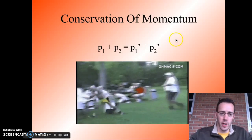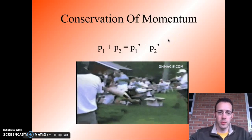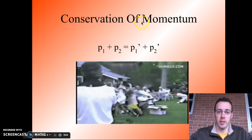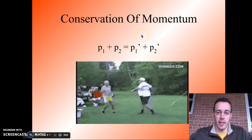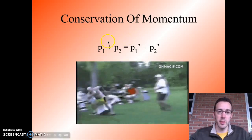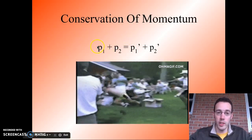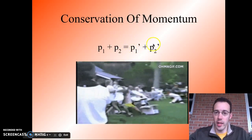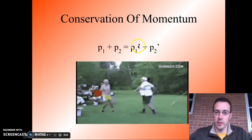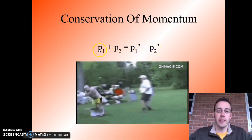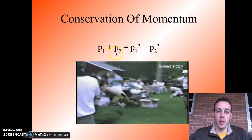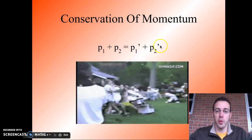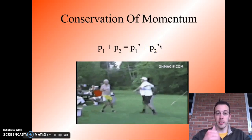Why do we care about momentum and how does it affect collisions? It's because of something called conservation of momentum: when any two objects bump into each other, the momentum is going to be conserved. So the momentum of object 1 plus the momentum of object 2 equals the momentum of object 1 and object 2 after the collision. This equation is read P1 plus P2 equals P1 prime plus P2 prime — the primes just mean after the collision.